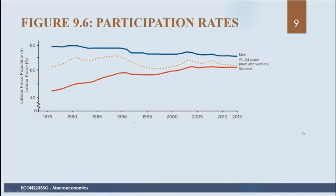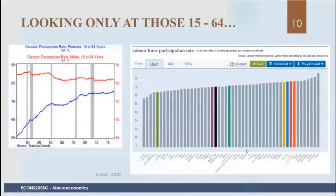Participation rates have changed a lot over the years. In 1975, the participation rate for women was under 50%, and for males it was around 80%. Over the last few decades, the participation rates of men and women are getting closer to convergence. Looking at those between ages 15 and 64, some countries have higher or lower participation rates — countries with the highest include Sweden, Switzerland, and Iceland.